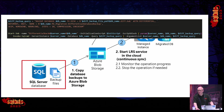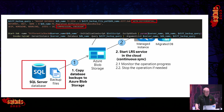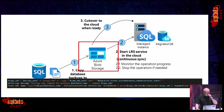When the full backups are restored on the Managed Instance, we can then take a differential backup, specifying WITH DIFFERENTIAL along with the compression and checksum options, run that as a PowerShell job, and then copy that differential backup to the storage account using AzCopy, also as a background job.